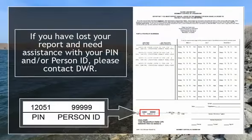First, you will need to locate your PIN and Person ID numbers. These can be found in the bottom left corner of the Water Use report mailed to you in January. PIN and Person ID numbers are unique to you.